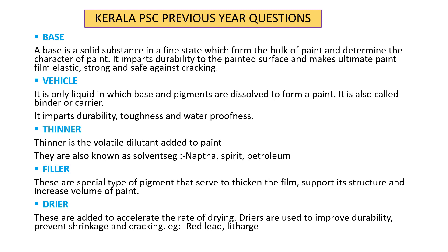The filler is a special type of pigment used to add admixture for durability of the paint. An example of a filler is barium sulfate. These are the basic constituents of paint.